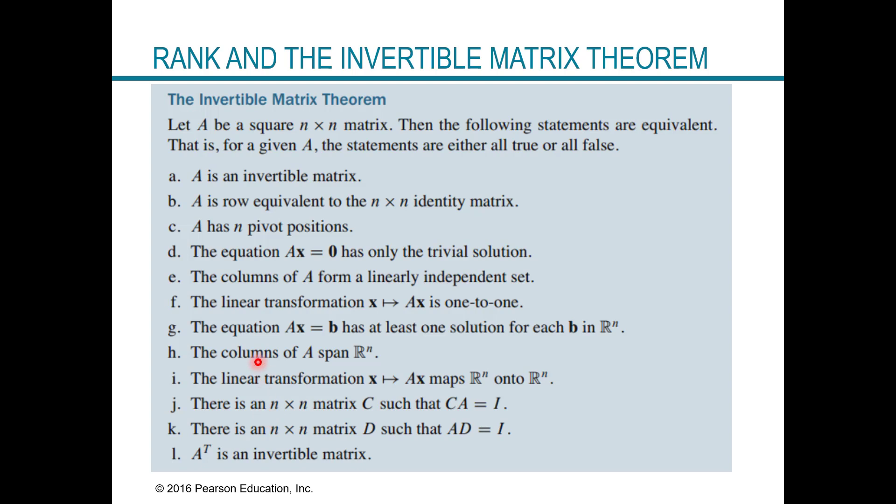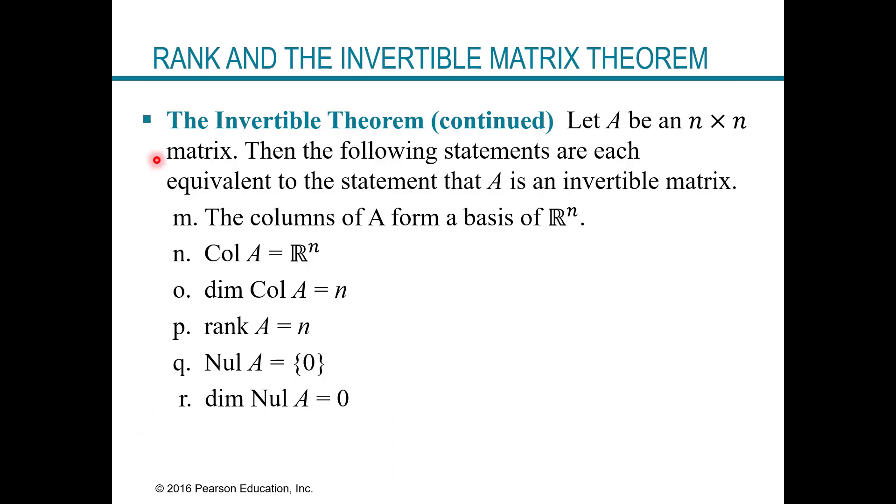And then the last thing here is to go back to the invertible matrix theorem, which we talked about invertible matrices in the past. We looked at this theorem previously, and now we're going to add to it. So this theorem is already pretty long. We have quite a few components of it, and we're going to add a few more to it. So our invertible matrix theorem continued, we're adding the following. And so we can now say that the columns of A form a basis of Rn, that the column space of A equals Rn, that dimension of the column space of A equals n, rank of A equals n, the dimension of the null space is zero, and then the null space of A is a zero set, and then the dimension of the null space of A is zero. This is all true for invertible matrix.